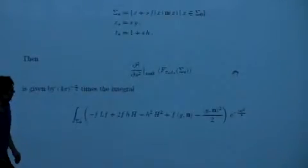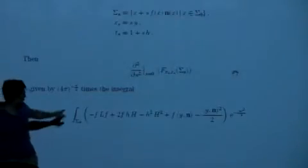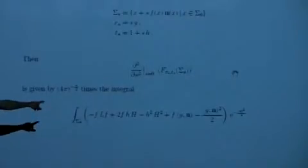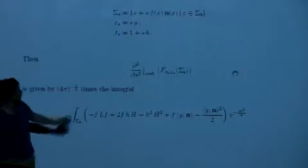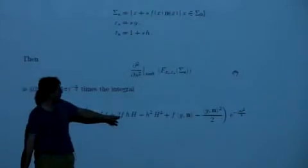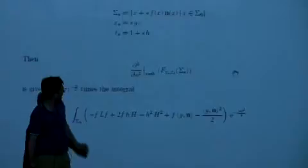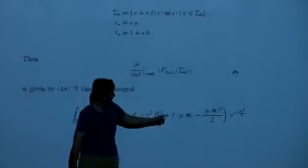The first term is exactly what we expect — an exact analog with what you see in the second variation formula for geodesics or minimal surfaces: operator L applied to f, where L is script L plus |A|² plus one-half. Then we have two negative square terms: an integral of h² and an integral of (y·n)², plus two cross terms. You'll notice there's a missing cross term involving y and h together — I'll come back and explain why that term is missing.